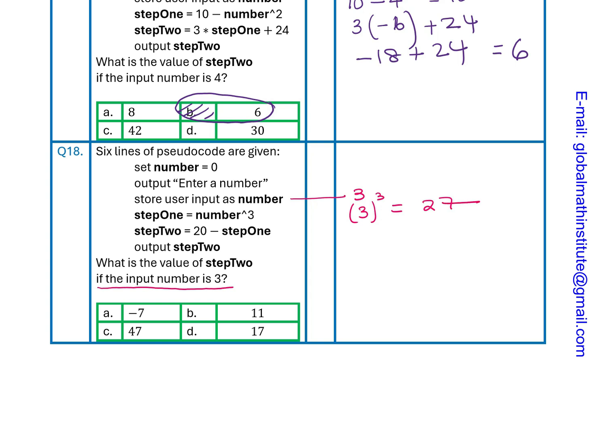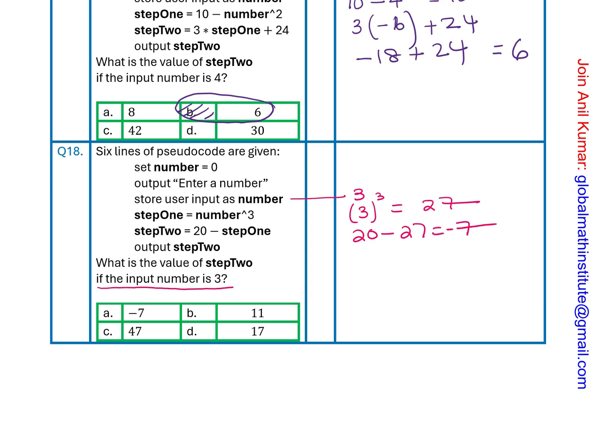Step 2 is 20 minus Step 1, so 20 minus 27, which is negative 7. The output is Step 2, which is negative 7. The answer is option A, negative 7.